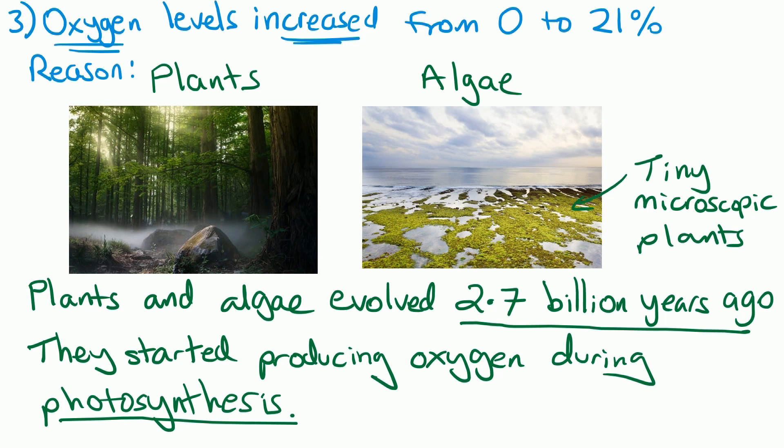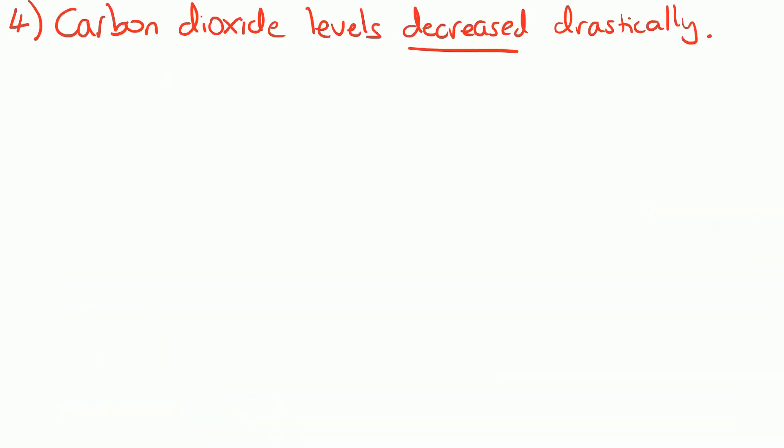Once they'd evolved, they started producing oxygen whilst they were photosynthesizing, and over the last 2.7 billion years all of the plants and algae on earth have been putting more oxygen into the air. That's why it's increased up to the current level of 21%. Carbon dioxide levels in the atmosphere have decreased drastically from over 90% to today's level of 0.04%, and there are several reasons for this.